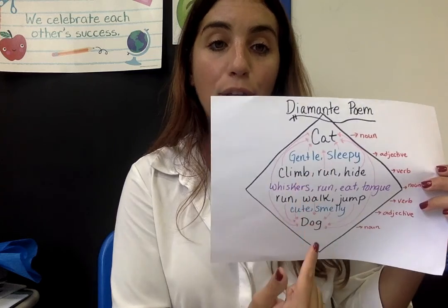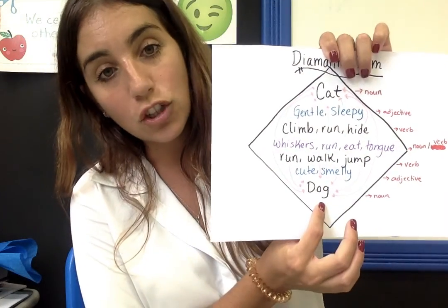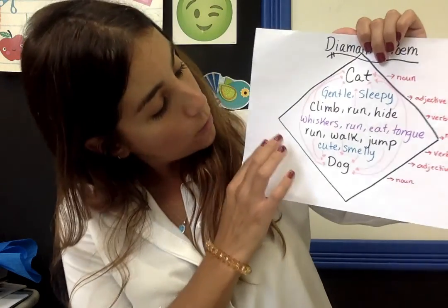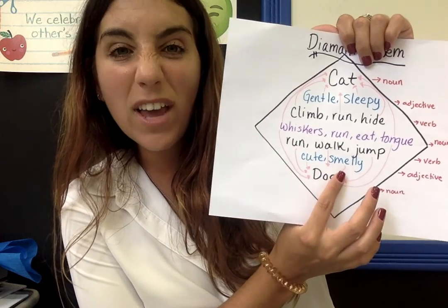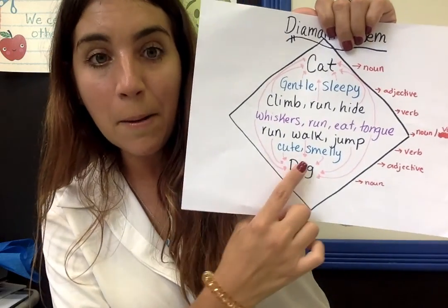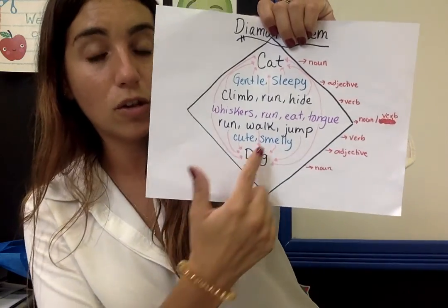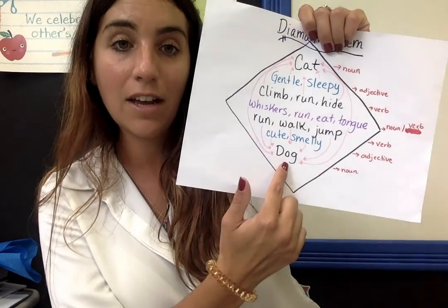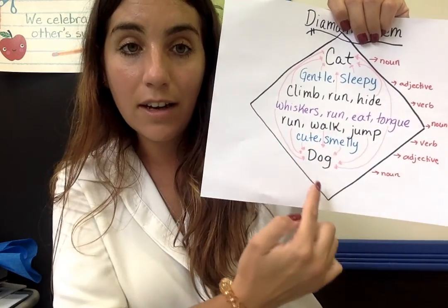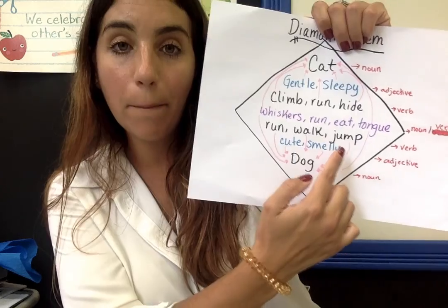They are describing both cats and dogs. On the end here we have the word dog — cachorro. Here we have two words describing a dog: cute — fofo — and smelly. That's describing a dog. A gente decidiu essas são as duas palavras que descrevem cachorro. The next thing are the three verbs — os três verbos — para descrever cachorro: run, walk — andar — and jump.